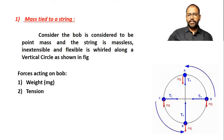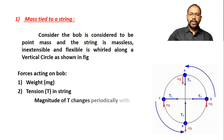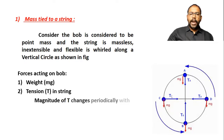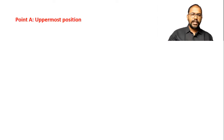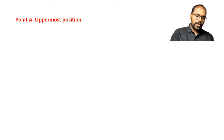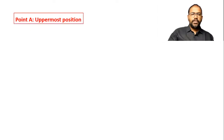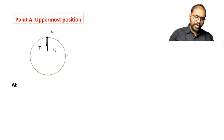Now the forces acting here — we discussed weight and tension. The magnitude of the tension changes here; tension is different at different points. We will discuss that in the coming section. First, we discuss point A, the uppermost position. At the uppermost position, I am showing a diagram with only the uppermost position.